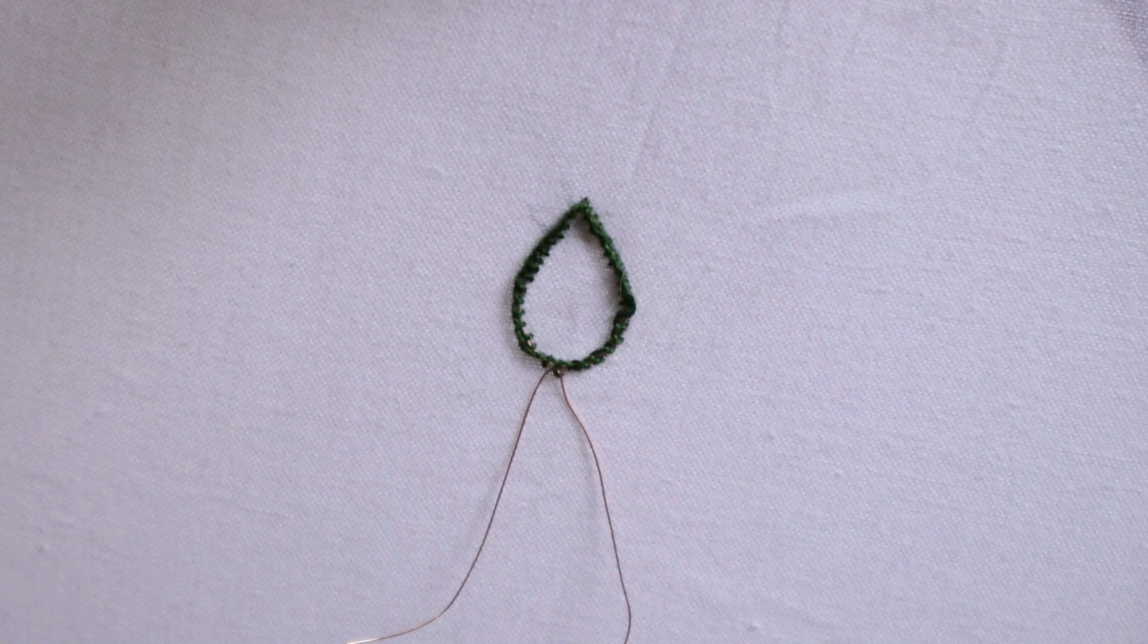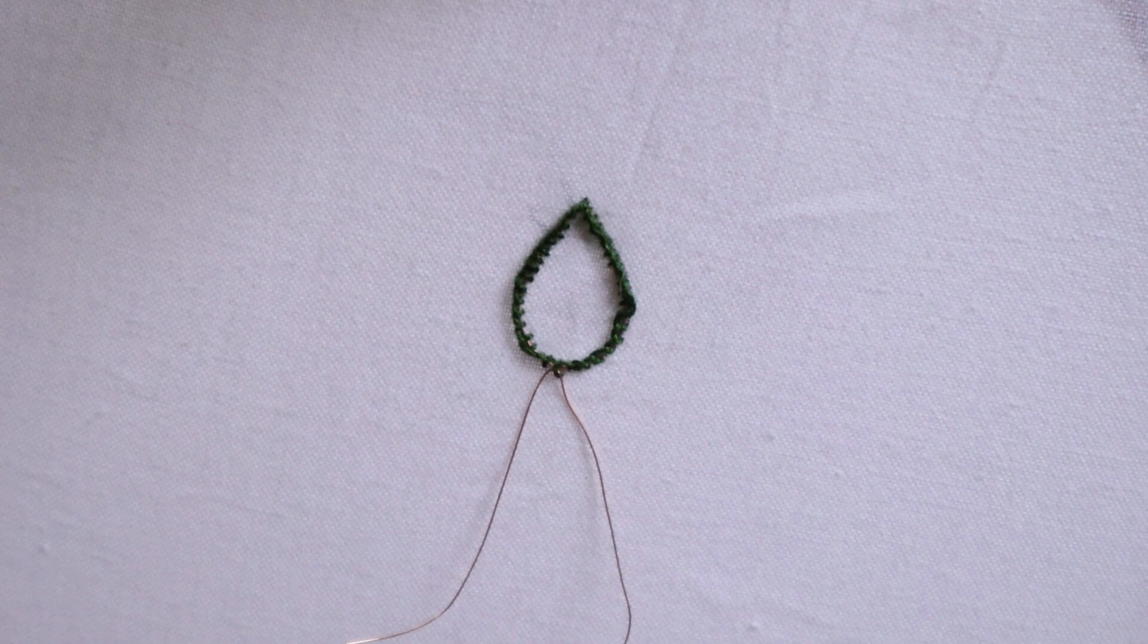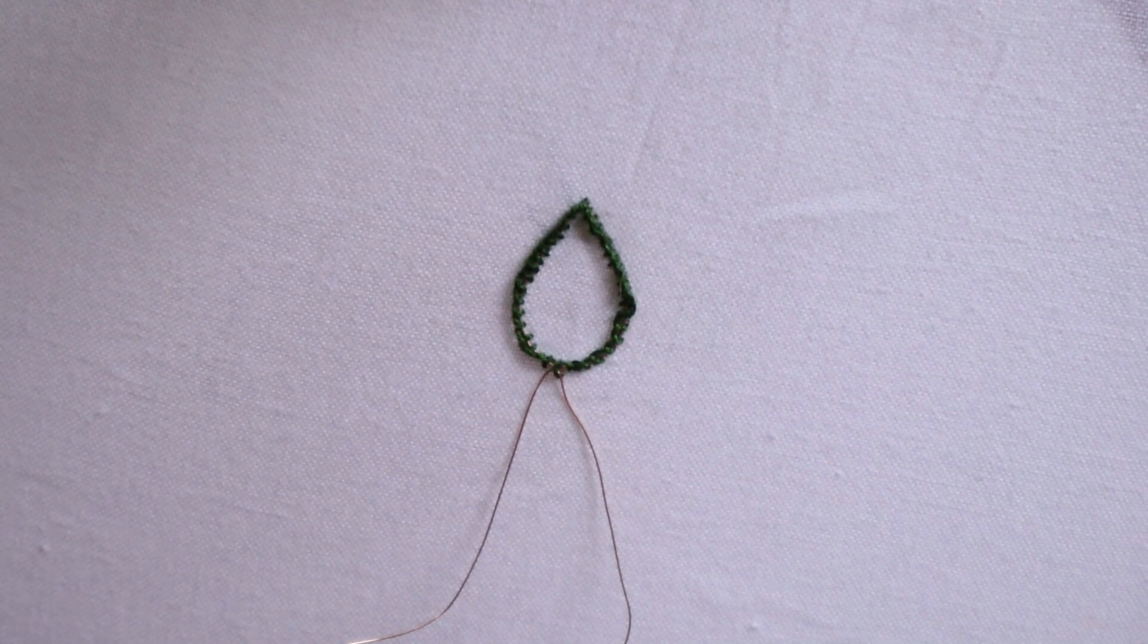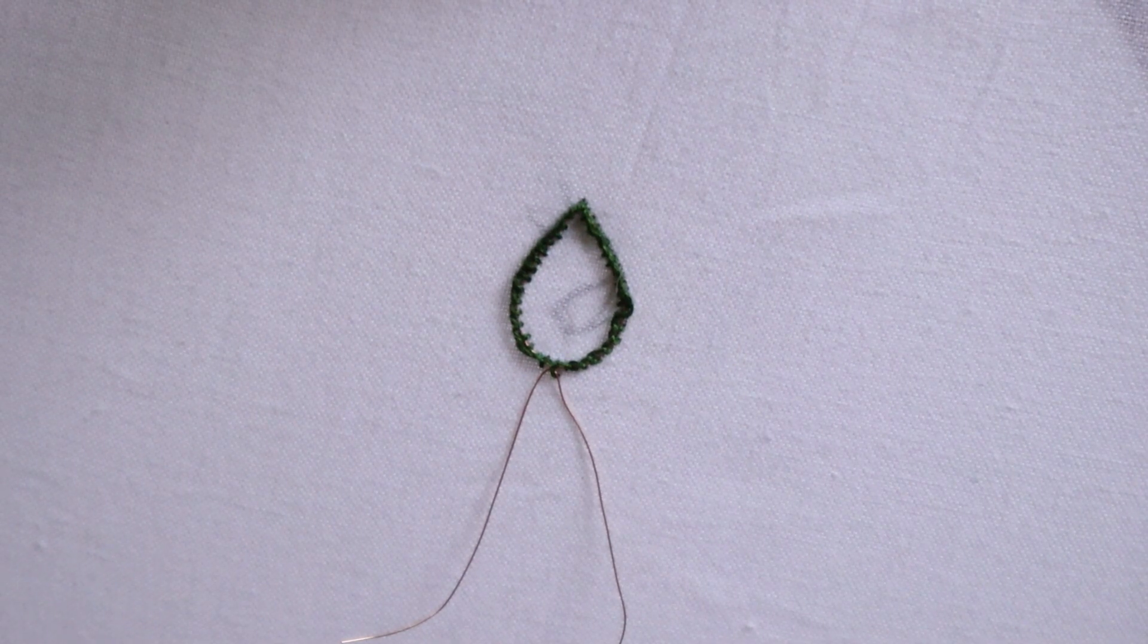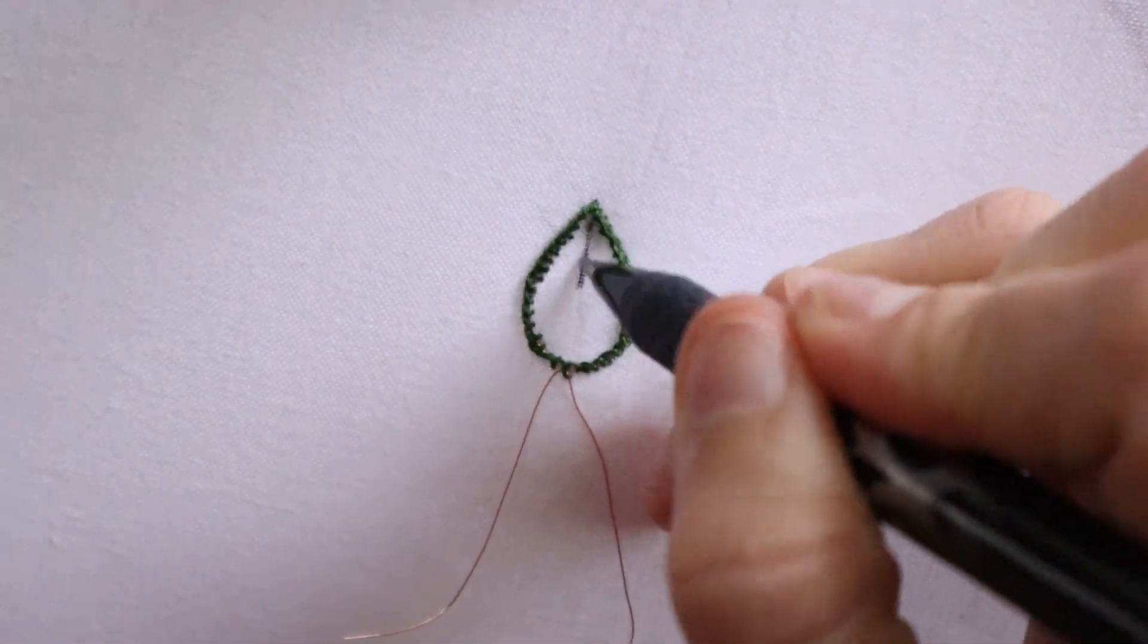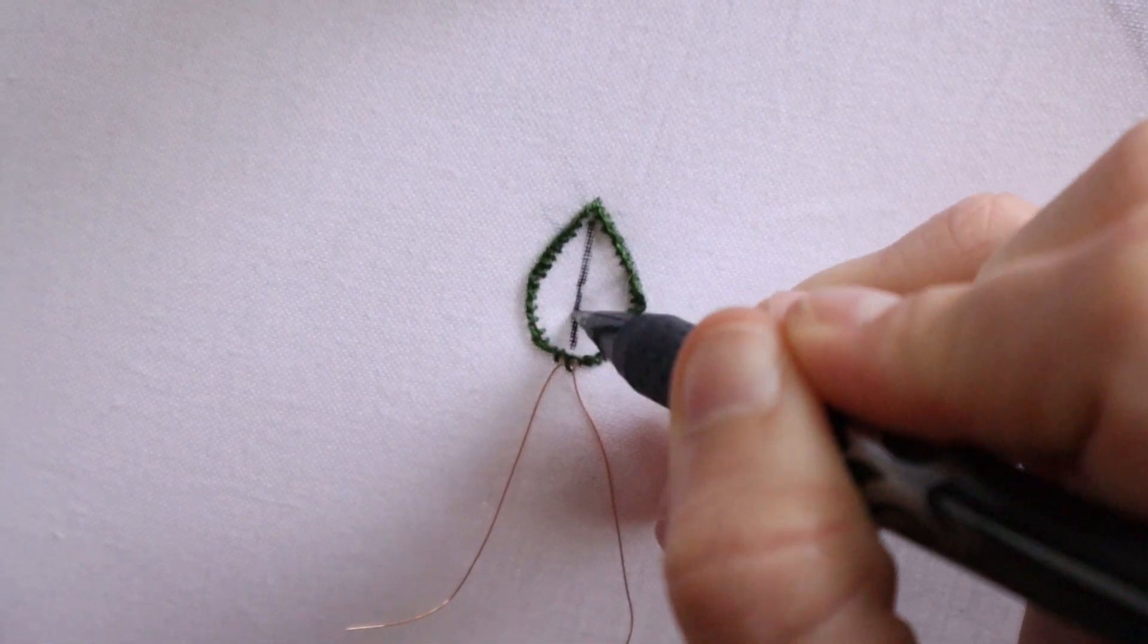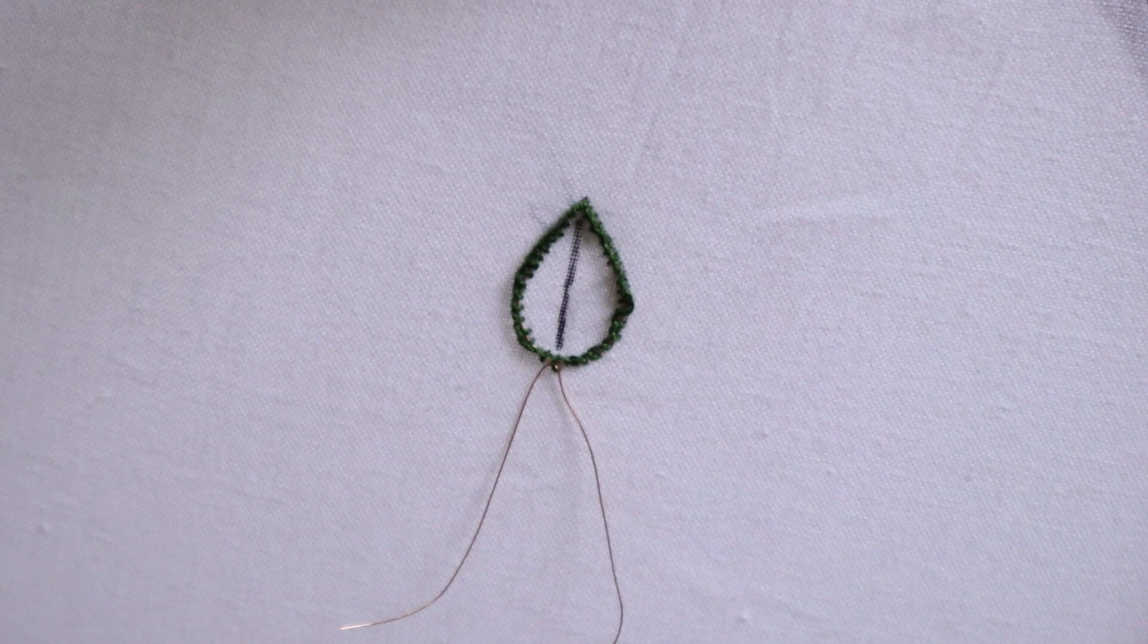Again, I'm just gonna use two strands of embroidery floss, same color. I'm just gonna do some satin stitches. I'm gonna draw a line down the center and kind of make it look more like a leaf. So there's kind of a split down the center, like a vein.